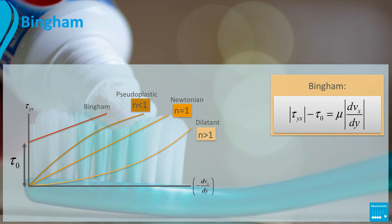In this model tau0 is the yield stress. Before this value of the shear stress the fluid doesn't flow. After this critical value the fluid starts to flow like a Newtonian fluid.